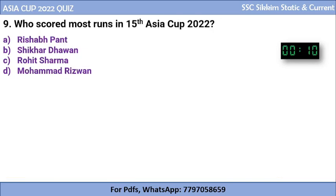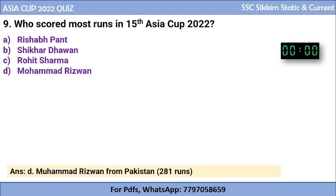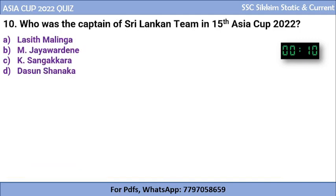Question 9: Who scored the most runs in the 15th Asia Cup 2022? The options are Rishabh Pant, Shikhar Dhawan, Rohit Sharma, or Mohammad Rizwan. The correct answer is Mohammad Rizwan, who is from Pakistan, scoring 281 runs — the most runs in this year's Asia Cup.